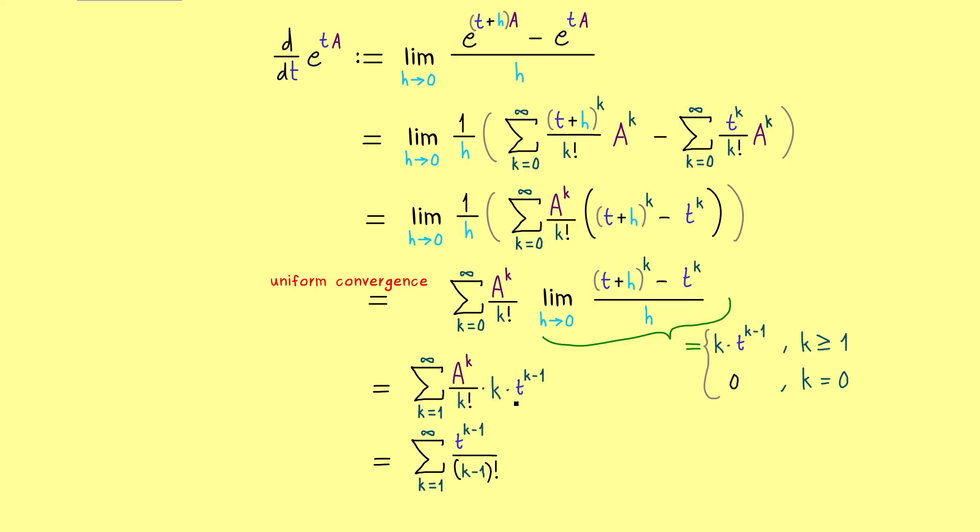In that sense we only have (k - 1) factorial in the denominator. Moreover also in the numerator we have t with the same power k minus 1 and only the matrix A has one power too much. However this is not a problem because we can just take one matrix out of the matrix product.